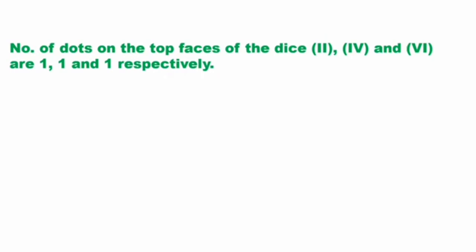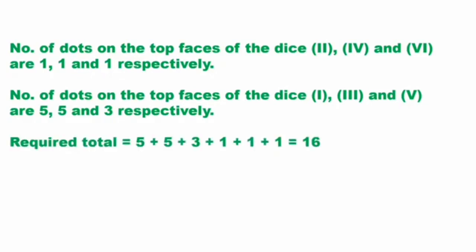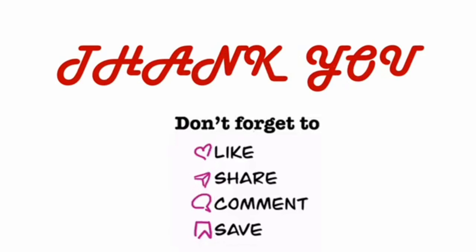We conclude that the number of dots on the top faces of all the dice are 5, 5, 3, 1, 1, and 1 respectively. The total is 5 plus 5 plus 3 plus 1 plus 1 plus 1, which equals 16. The answer is option C. Thank you for watching — keep liking, sharing, commenting, and saving, and please follow the Ignite channel.